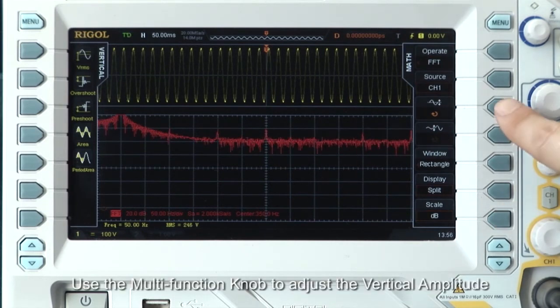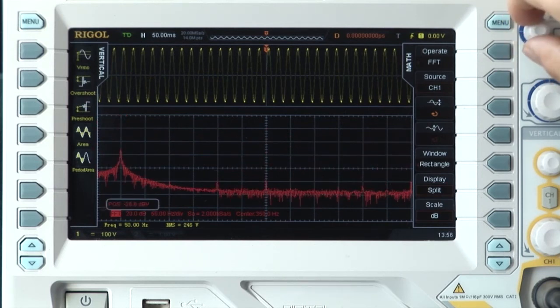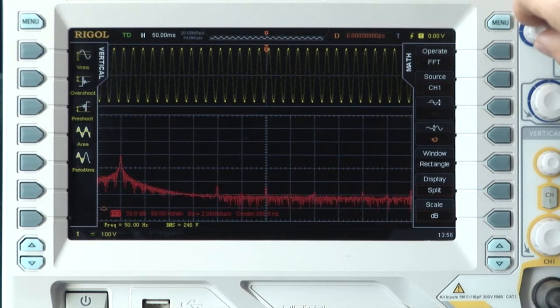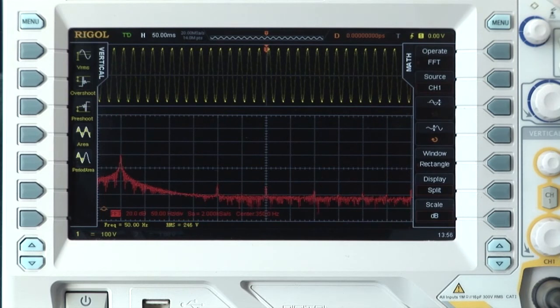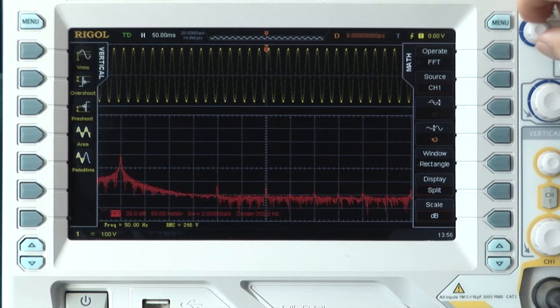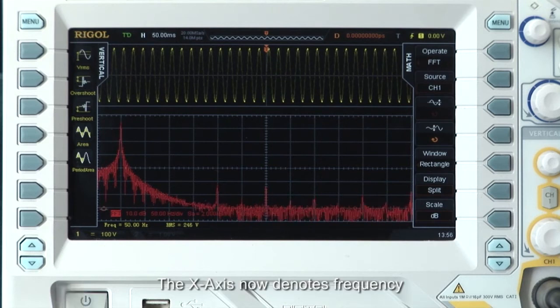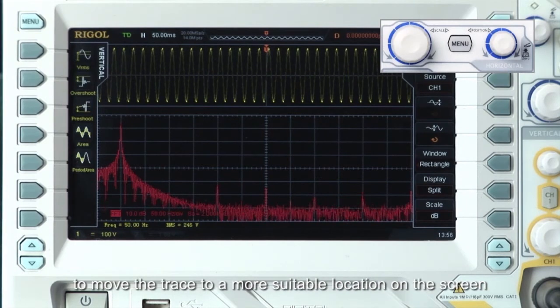Use the multi-function knob to adjust the vertical amplitude and vertical position. The x-axis now denotes frequency. We can use the horizontal scale and position knobs to move the trace to a more suitable location on the screen.